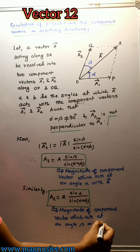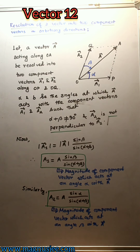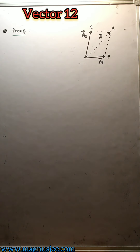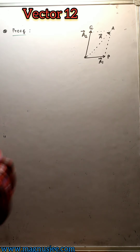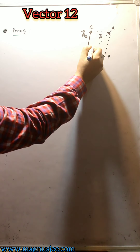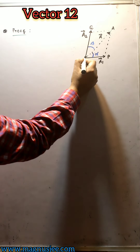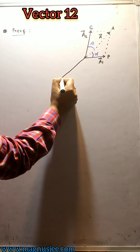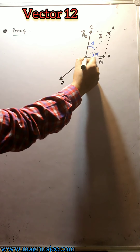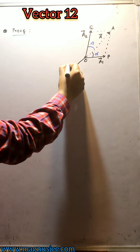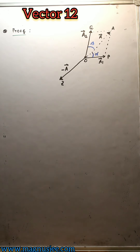These are the formulas for the magnitudes of two component vectors. Now, how to prove these formulas. Vector a is represented by the straight line OA. Alpha is the angle between a and a1, and beta is the angle between vector a and vector a2. We extend vector a in the backward direction; OZ is the direction along which minus vector a acts, and the magnitude of minus vector a equals the magnitude of vector a.